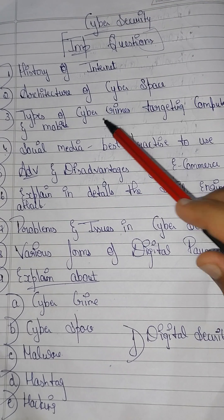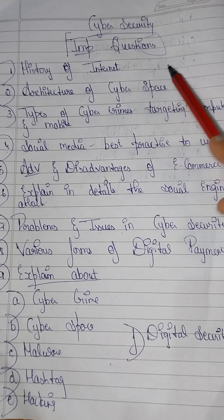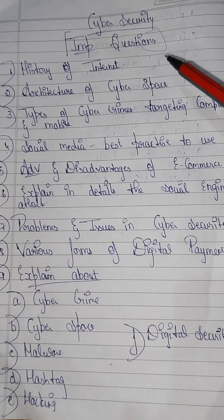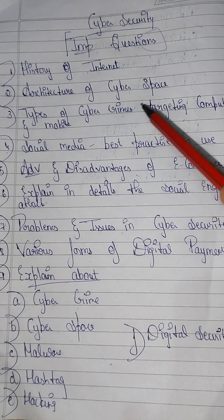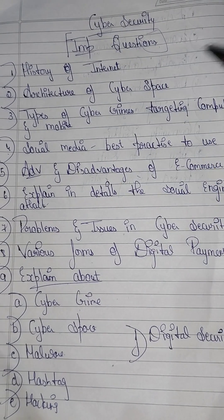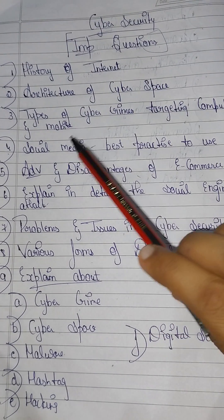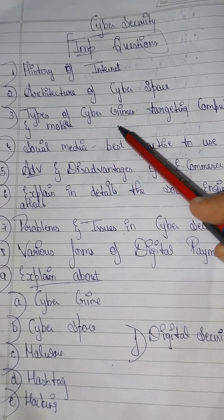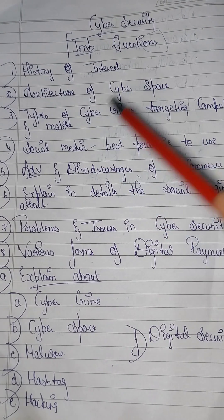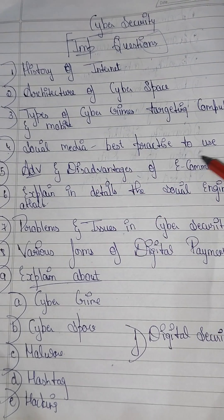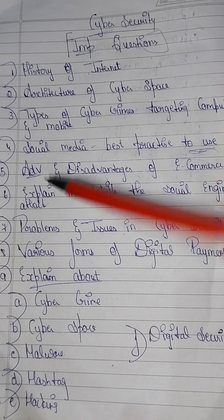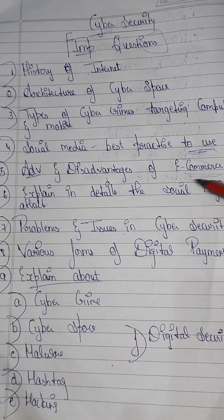The first question is the history of the internet — explaining how it started and how to use it. Next is architecture of cyberspace, which I have already uploaded. Next is types of cyber crimes targeting computers and mobiles, social media best practices and uses, and advantages and disadvantages of e-commerce.